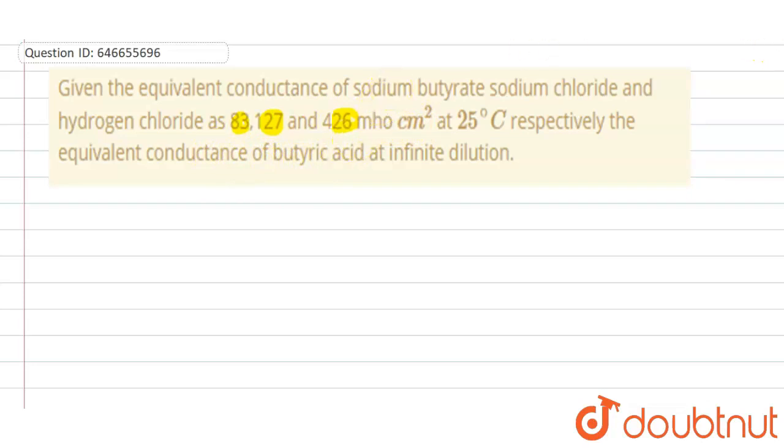So we need to find out the butyric acid lambda equivalent at infinite dilution. In question we are provided with C4H7COONA, which can be written as...